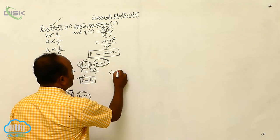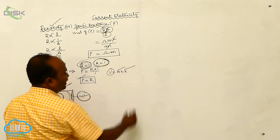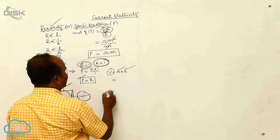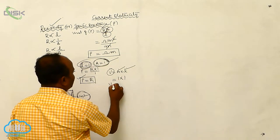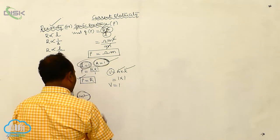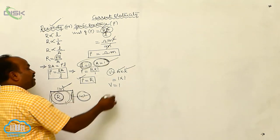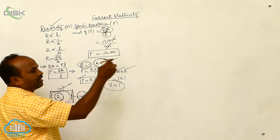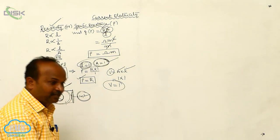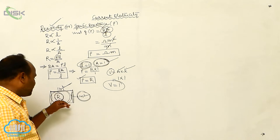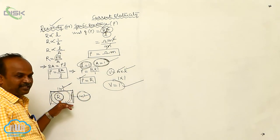In other words, suppose V equals A into L — volume equals cross-sectional area into length. If area equals 1 and length equals 1, then V equals 1. Therefore, there is a conductor with a particular resistance; when the volume is 1, that particular resistance is called resistivity. The resistance of a conductor of unit volume is also known as resistivity.